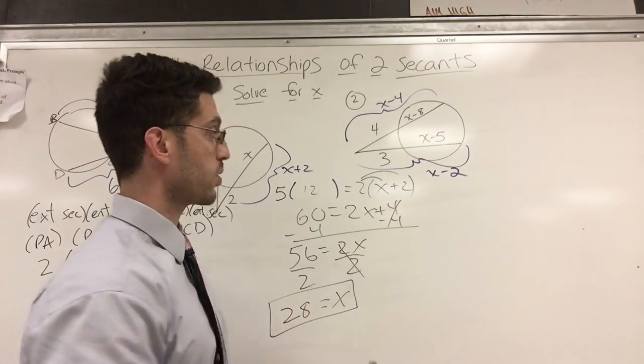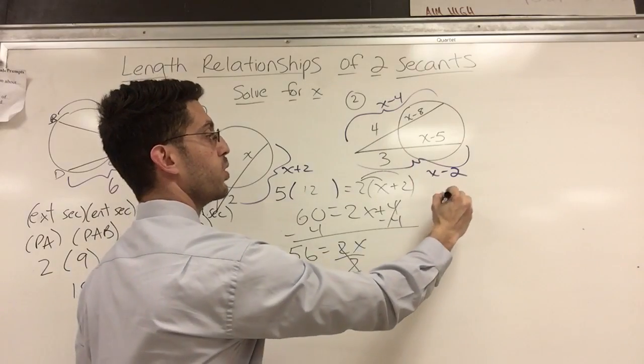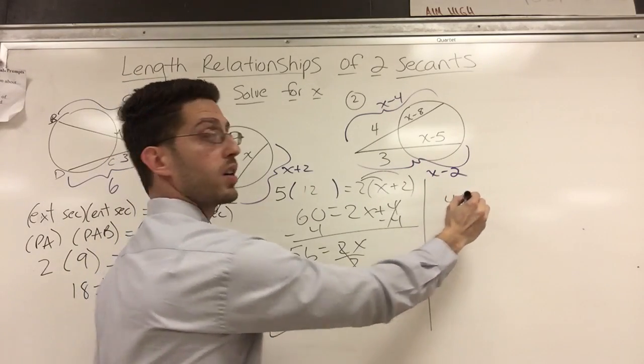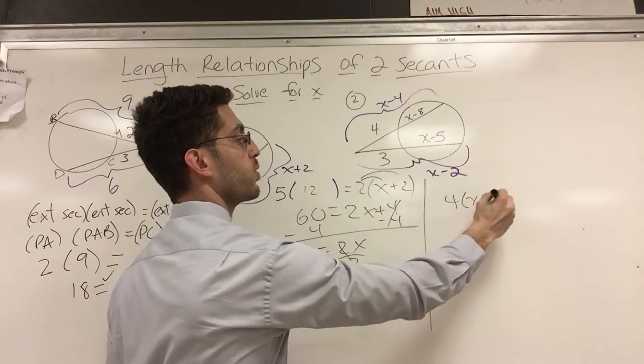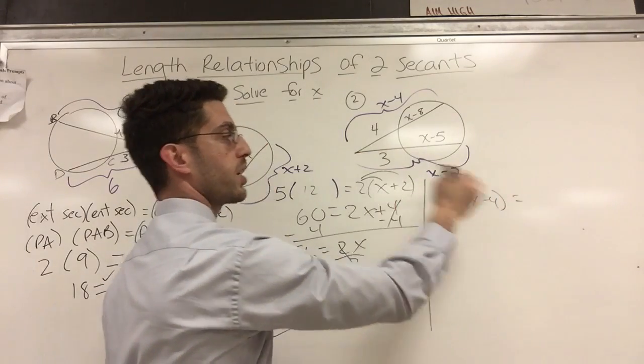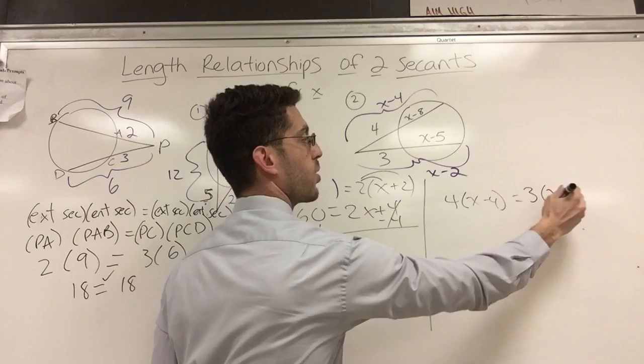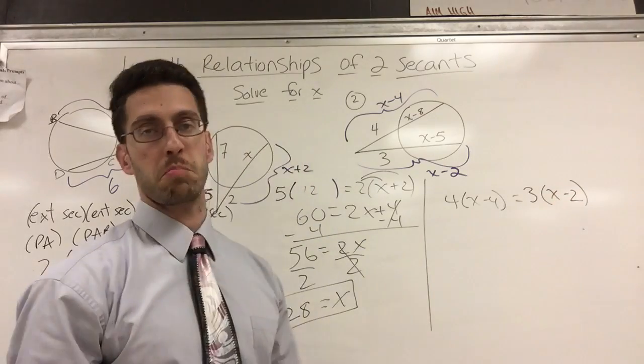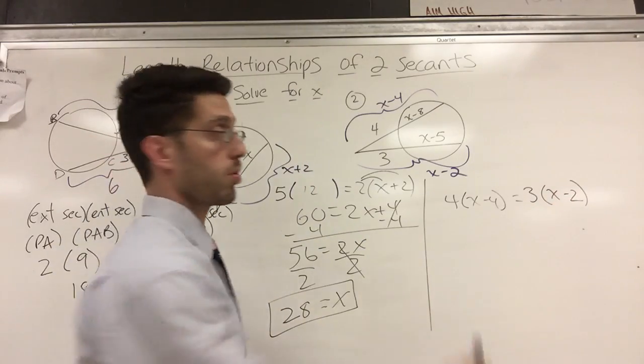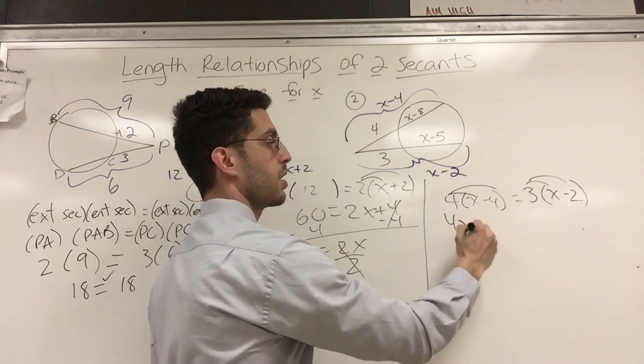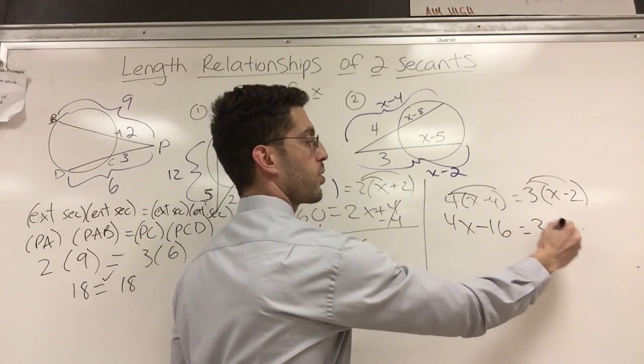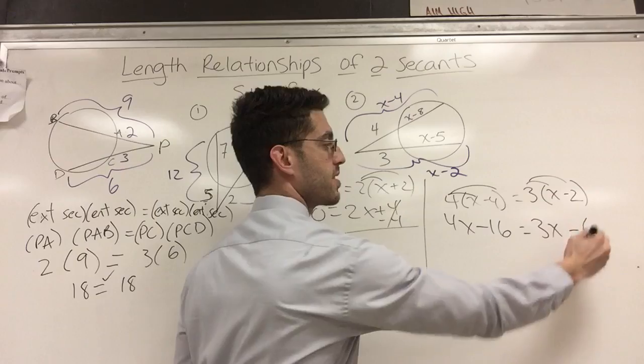Hopefully this will fit. Outside is 4 times the whole thing is x minus 4 equals outside is 3 times the whole thing is x minus 2. Well, the rest is algebra. Distribute. Distribute. Distribute. 4x minus 16 equals 3x minus 6.